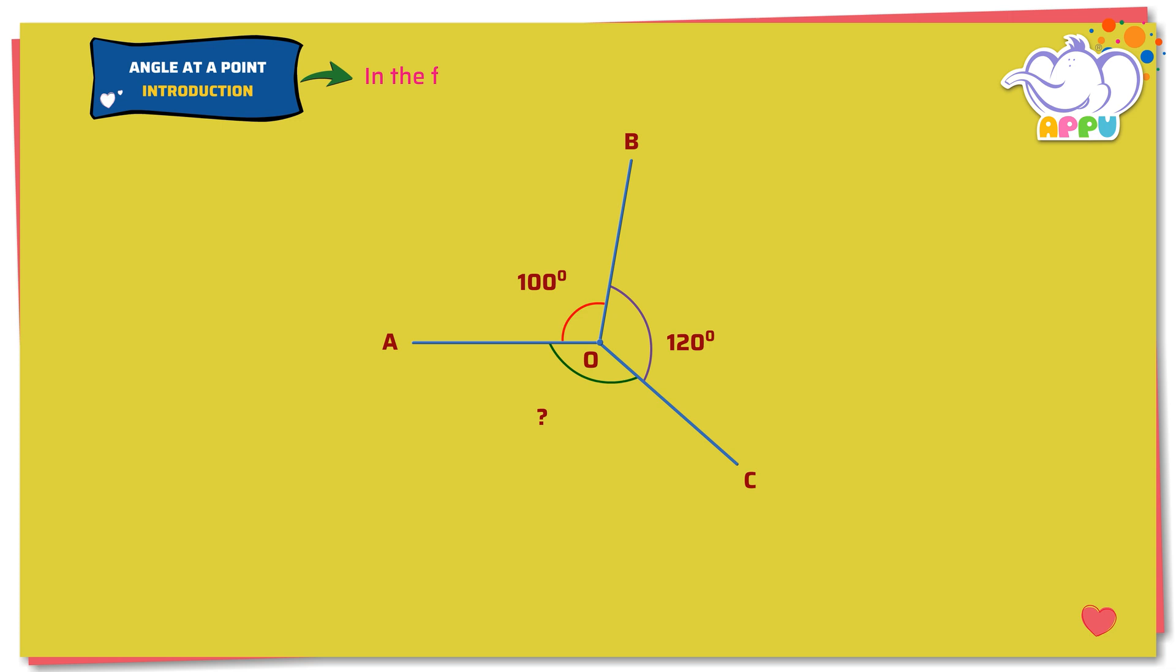In the figure, three lines are meeting at O. Angle AOB equals 100 degrees and angle BOC equals 120 degrees. What is angle COA?